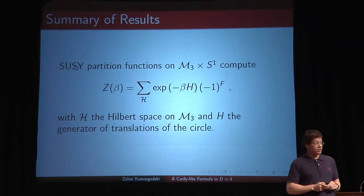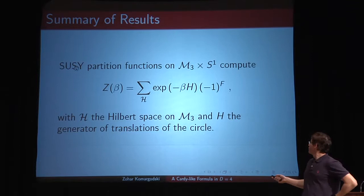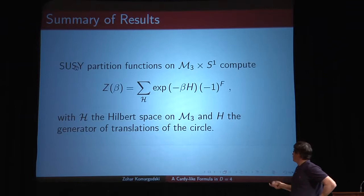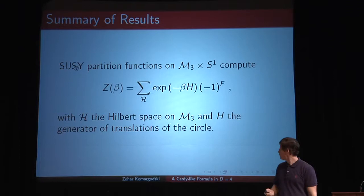One object I'll study is supersymmetric partition functions on spaces that look like three-manifolds times circles, where the circles have radius beta or one over the temperature. If you compute partition functions of supersymmetric field theories on such spaces, you get a partition function similar to the one discussed, but with a minus one to the fermion number — you sum over the Hilbert space of states over this three-manifold.